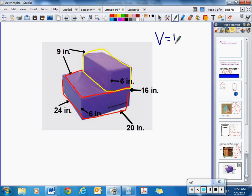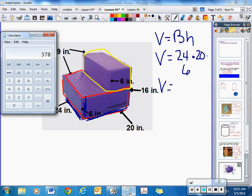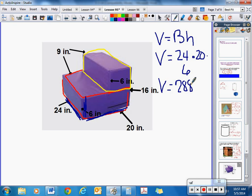The volume would be the area of the base times the height. Well, we know the base is 24 by 20. So, 24 times 20 times the height, which is 6 inches. Let's figure out what that is. Let me get the calculator here. We have 24 times 20 times 6, 2,880 cubic inches.